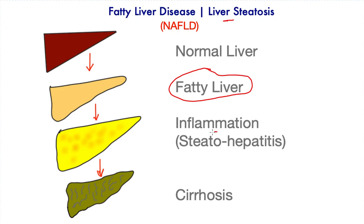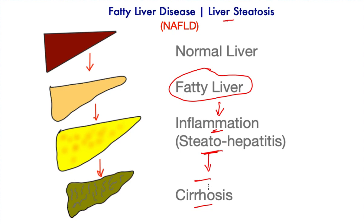When you add inflammation to this, it becomes a condition called steatohepatitis, which is a progression from fatty liver disease. If it is allowed to progress further without any treatment or improvement, there is increasing scar tissue in the liver leading to end-stage liver failure — a condition called cirrhosis of the liver. It is not clear what factors lead to this progression from fatty liver to inflammation, and once this is set in motion, further progression to cirrhosis over time is much more likely.